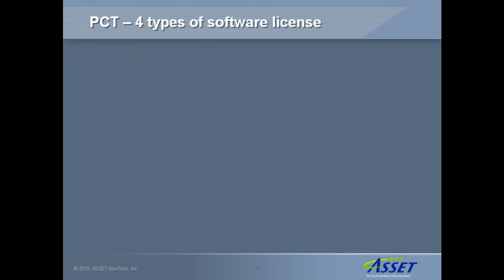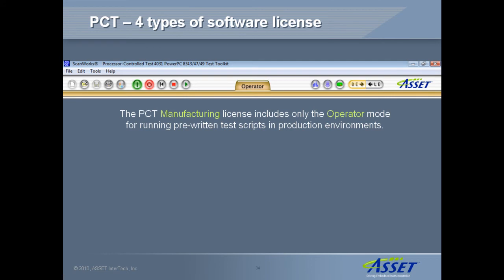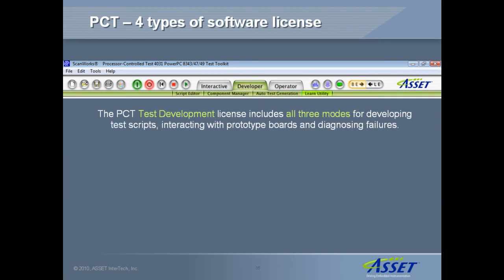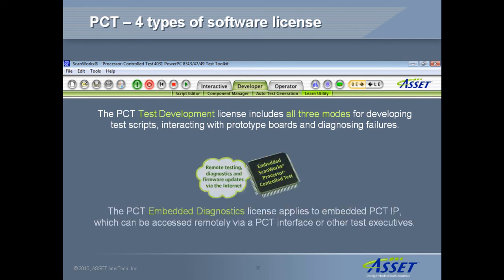There are four PCT software license types that are designed to match customers' needs. The PCT manufacturing license provides only operator mode for use in production environments. The PCT diagnostic and repair license gives access to interactive mode in addition to operator mode. The PCT test development license includes all three modes. The PCT embedded diagnostics license applies to embedded PCT IP, which can be accessed remotely via a PCT interface or other test executives.